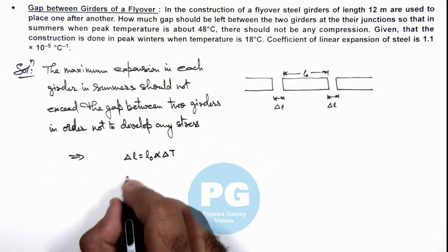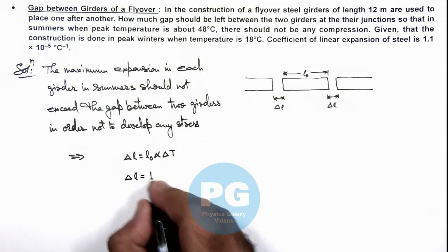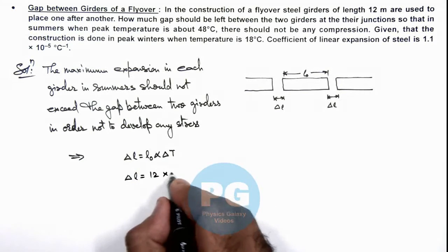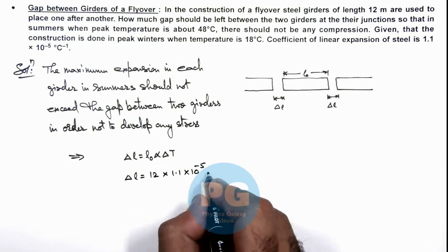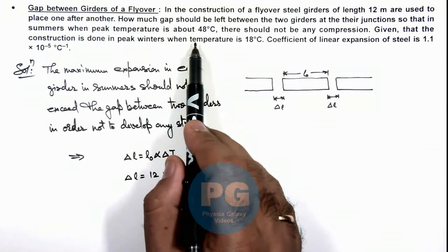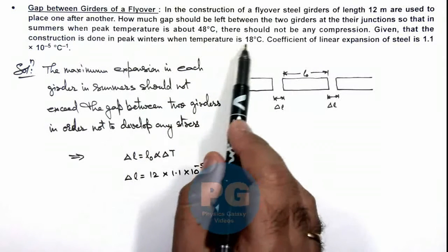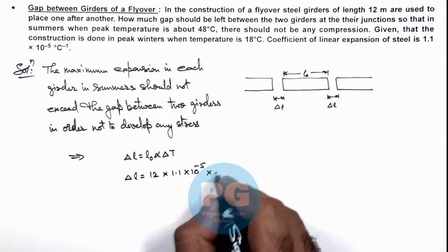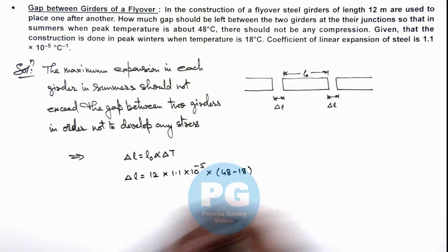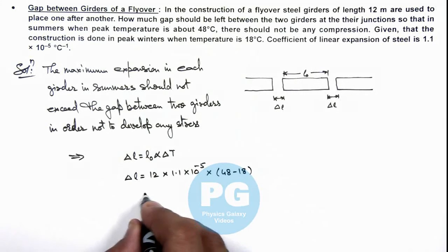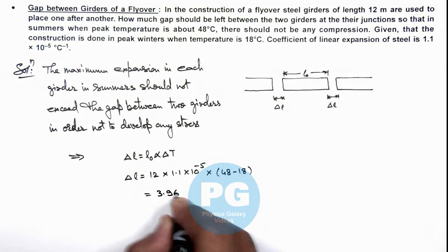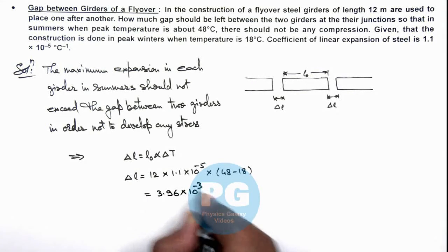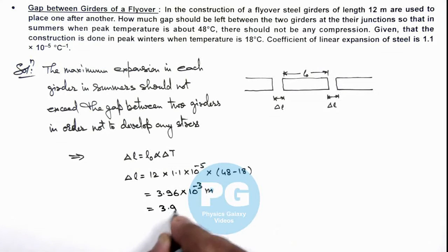L₀ we are given as 12, multiplied by α which is 1.1 × 10⁻⁵, and the peak temperature in summers is 48 degrees and in winters it is 18 degrees centigrade. So this will be 48 minus 18. This will be equal to, when you numerically calculate, 3.96 × 10⁻³ meters, which is equal to 3.96 mm. That is the result of this problem.